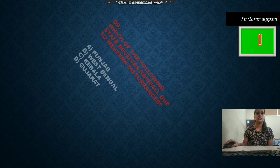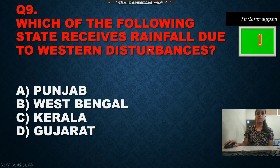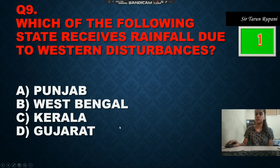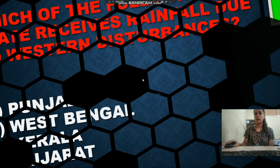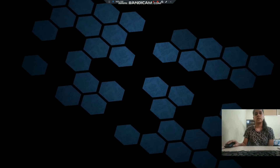Our next question: which of the following states receives rainfall due to western disturbance? Option A is Punjab, option B is West Bengal, option C is Kerala, and option D is Gujarat. The time is up and our correct answer is Punjab, option number A.